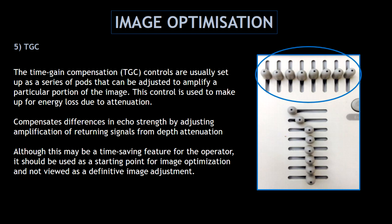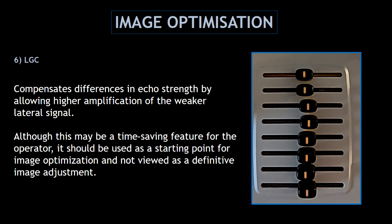Another feature is the TGC. The time gain compensation controls are usually set up as a series of pods that can be adjusted to amplify a particular portion of the image. This control is used to make up for energy loss due to attenuation. We can also adjust the LGC, lateral gain compensation, which compensates differences in echo strength by allowing higher amplification of the weaker lateral signal. Although TGC and LGC controls might be a time-saving feature, they should be used as a starting point for image optimization and not viewed as a definitive image adjustment.